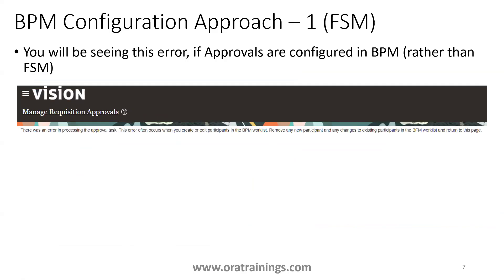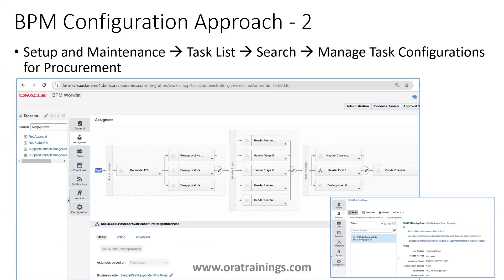This BPM screen — Manage Task Configuration for Procurement — comes into picture if you have already modified using the second approach. Any customization done in the first step using FSM gets automatically copied here, but if you directly modify via BPM, those changes will not get copied back into the first approach. That is how you can configure and customize the approval workflow.